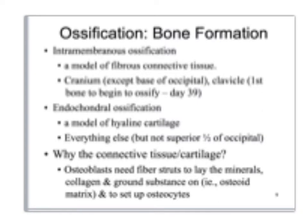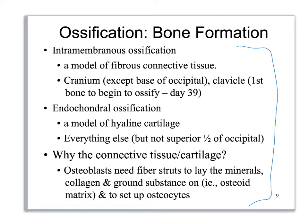In your lecture course you'll spend more time looking at ossification. For this lab, you need to know that intramembranous ossification is made out of fibrous connective tissue, whereas endochondral — remember, chondro means cartilage — is made out of hyaline cartilage. Osteoblasts need something to put minerals down on that will keep them in place, so they lay down fibers first in order to create the bone.